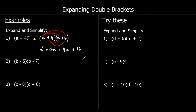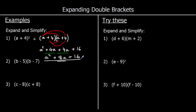Now we simplify. A squared terms aren't the same as a terms. But we've got two a terms that we can add together: 4a plus 4a is 8a. So we've got a squared plus 8a plus 16.